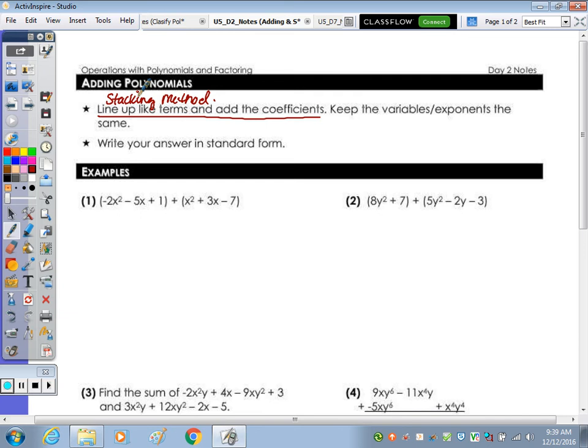Keep the variables and exponents the same. As we've mentioned last class, our answers need to be in standard form. So number one, I'm going to add straight across. When there's a plus sign, as we talked about in the day one notes, when you distribute the positive sign through, it's not going to change any of those signs. Positive times x squared is positive x squared, positive times positive 3x is positive, and positive times a negative 7 is a negative 7. So we don't need to necessarily remove parentheses here.